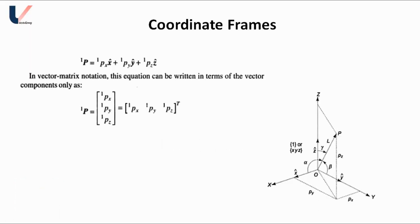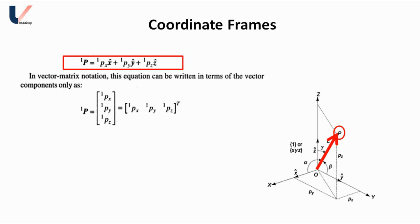A coordinate frame is a set of three orthogonal right-handed axes X, Y, Z called principal axes. Any point P in 3D space can be defined with respect to this coordinate frame by vector OP, where O is the origin. It can also be represented as an equation where 1Px, 1Py, 1Pz are the X, Y, and Z coordinates respectively with respect to frame 1. This equation can also be represented in matrix form, which is very important in robotics.